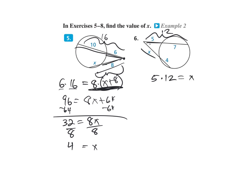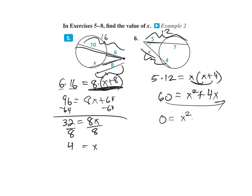X plus 4 is the whole piece — you're adding the segments together. So 5 times 12 equals 60. This gives X squared plus 4X. It looks like a trinomial, so move the 60 over: X squared plus 4X minus 60 equals 0. Factor — try factors of 60 that give a difference of 4: 6 and 10 work.